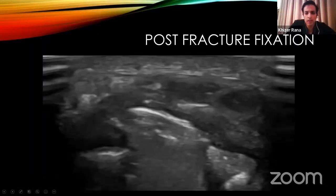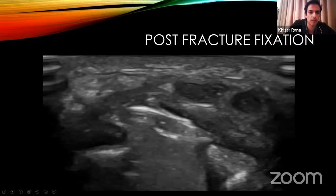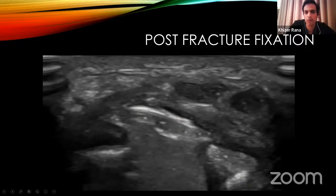Ultrasound is particularly valuable in post-operative patients where MRI cannot be used due to metalwork. In one case, a patient with previous fracture and retained metalwork had ulnar nerve impingement visible on ultrasound — the nerve was at the top, with thickened nerve bundles, and the nerve could be seen slowly catching and chafing over bone fragments and metalwork as it crossed over the medial epicondyle during dynamic scanning.